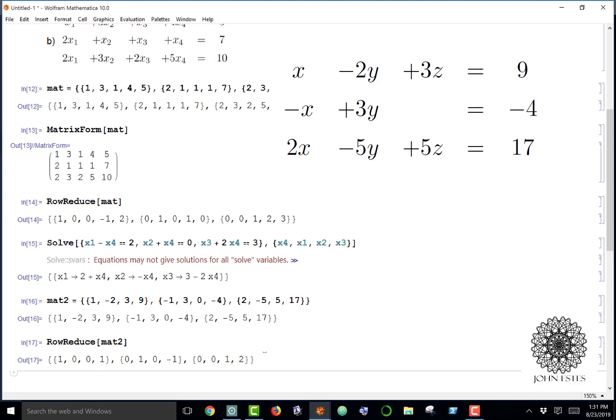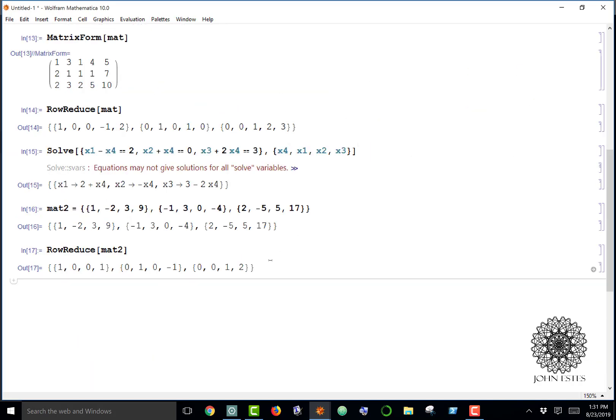We've used Gauss-Jordan elimination to get reduced row echelon form, and so it's easy to pick out our solutions from there.